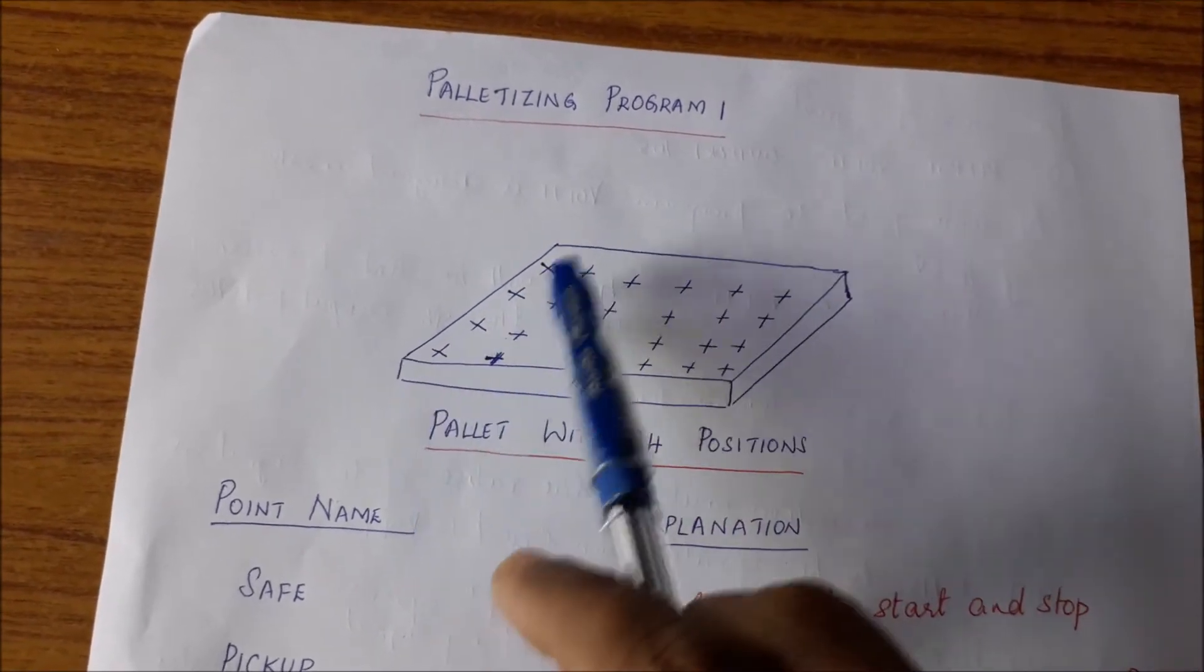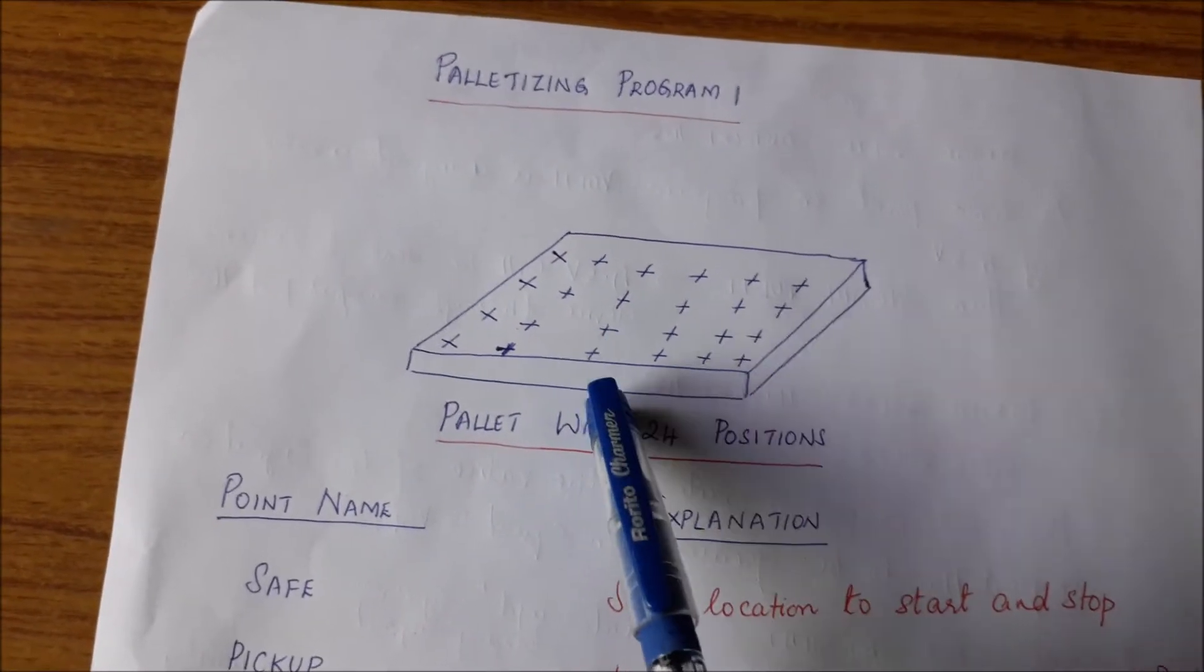There are let us say 4 rows and 6 columns. So you can put about 24 parts on this pallet.